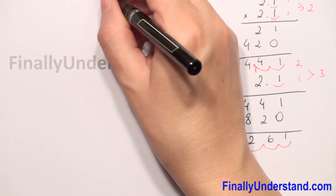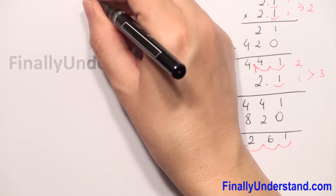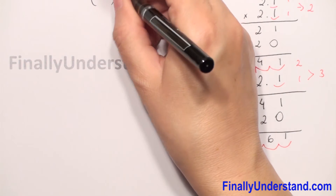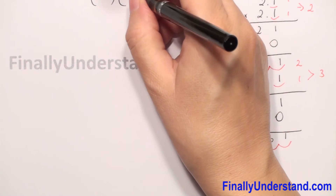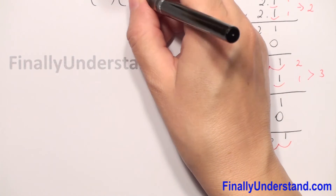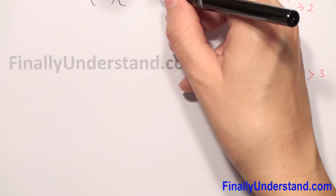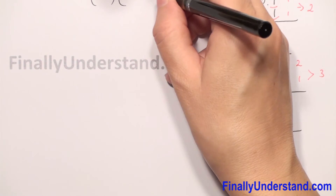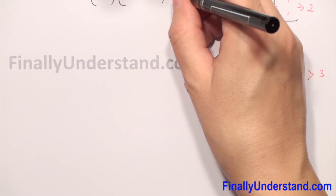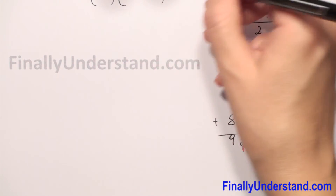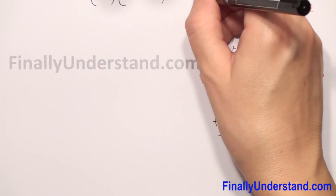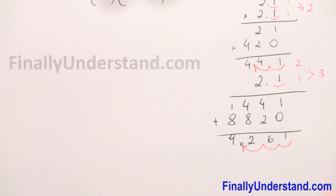Now we have completed the power. So we have 5.4 times 9.261, and at the end we have division by 0.2.